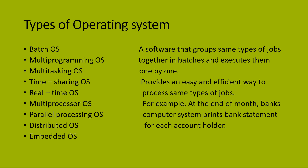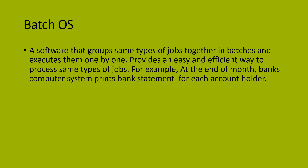Those were the commonly used operating systems. Now we will talk about types of operating systems. These include: batch operating system, multiprogramming operating system, multitasking operating system, time sharing, real time, multiprocessor, parallel processing, distributed OS, and embedded OS.